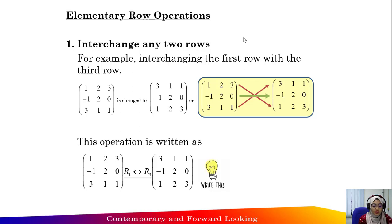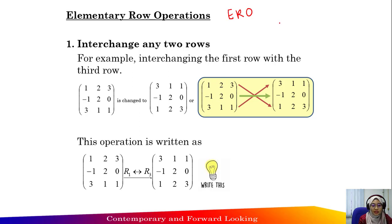The second method to find the inverse of a three by three matrix is by using elementary row operations, or ERO. There are three important methods to perform elementary row operations.